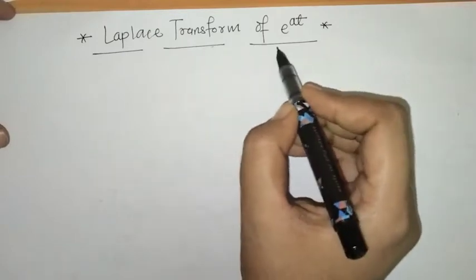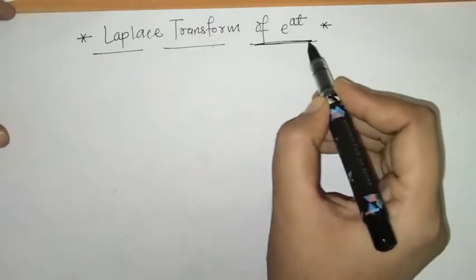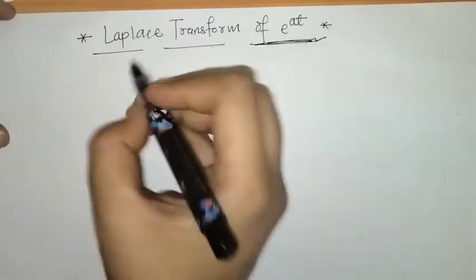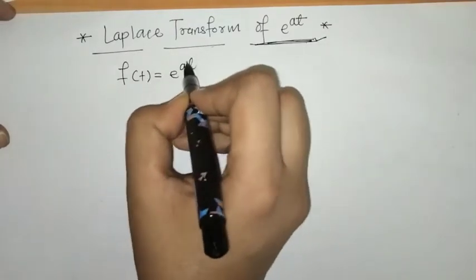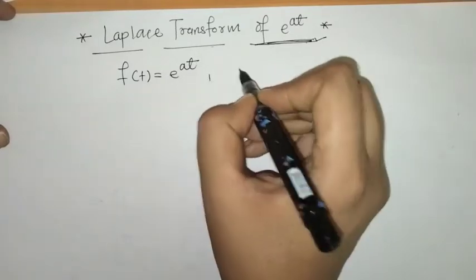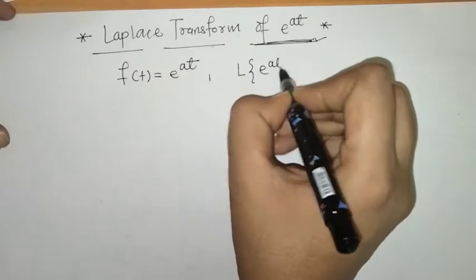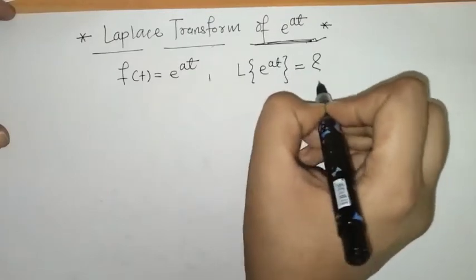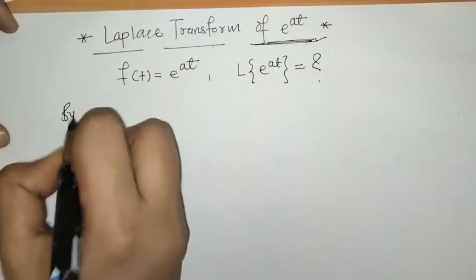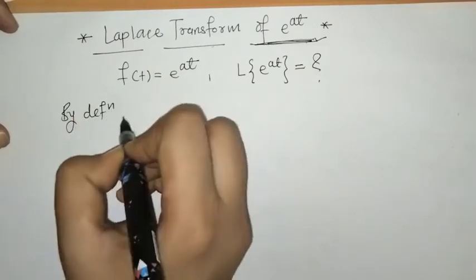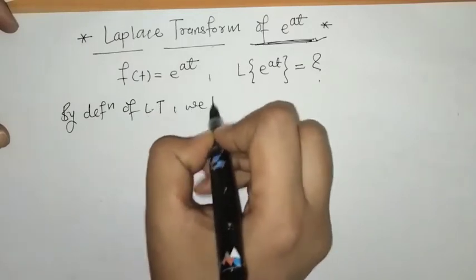Hello everyone, welcome to Unlock Math. Today we have to find the Laplace transform of e raised to at. That means f(t) = e^(at), where a is a constant, and we have to find the Laplace of e^(at). We will do this by using the definition of Laplace transform.